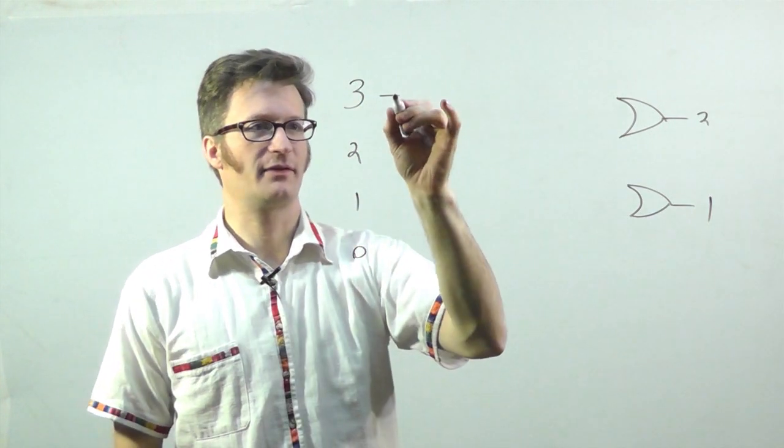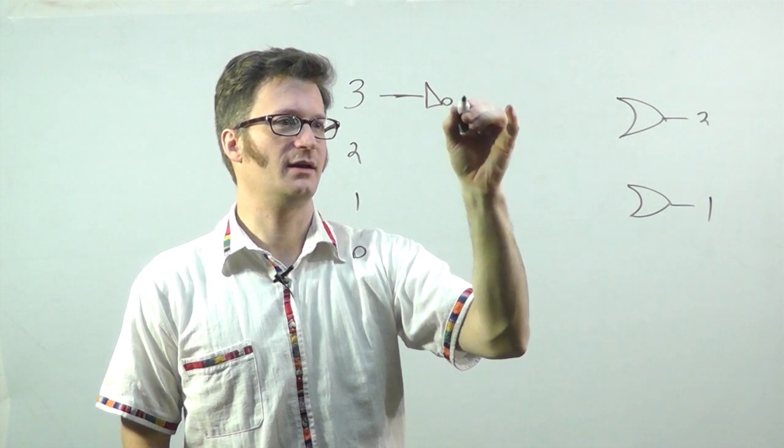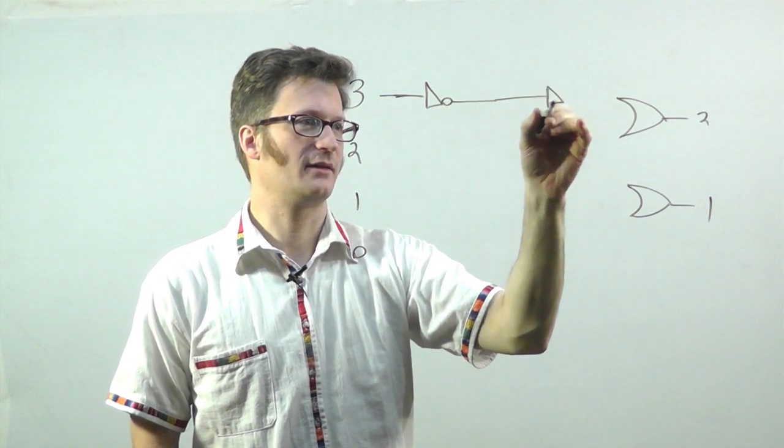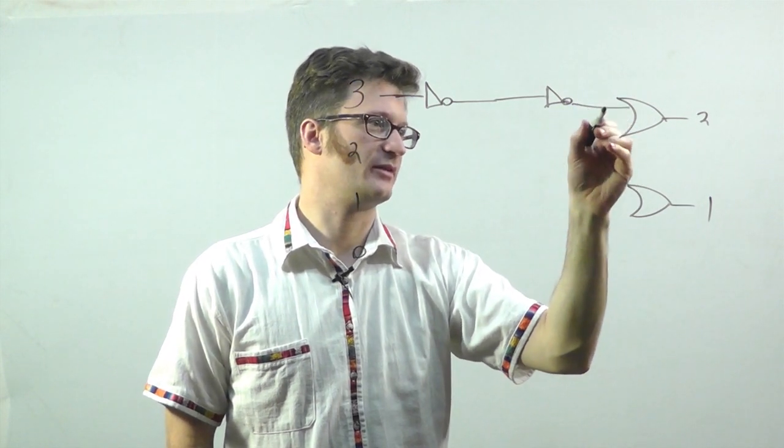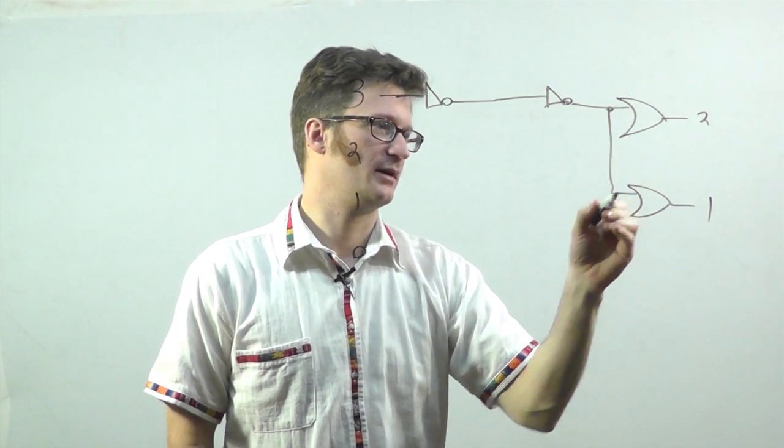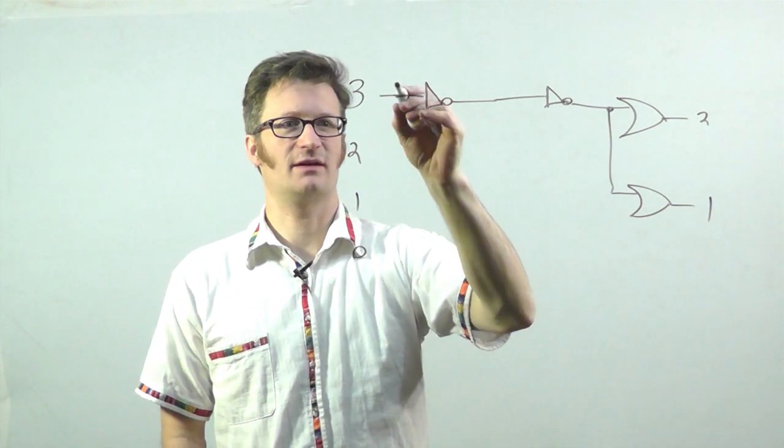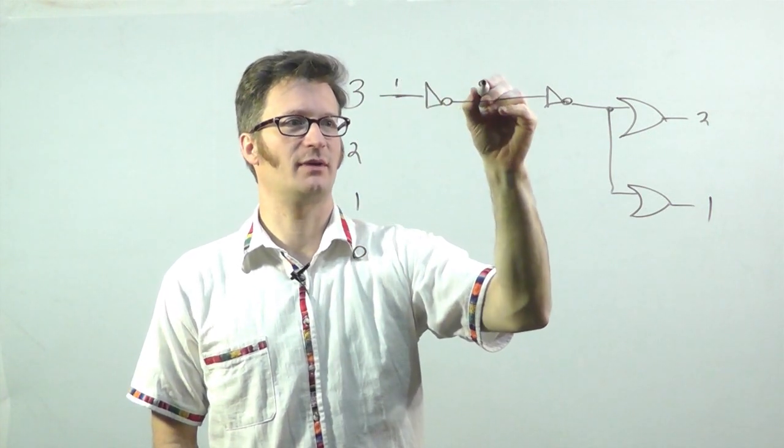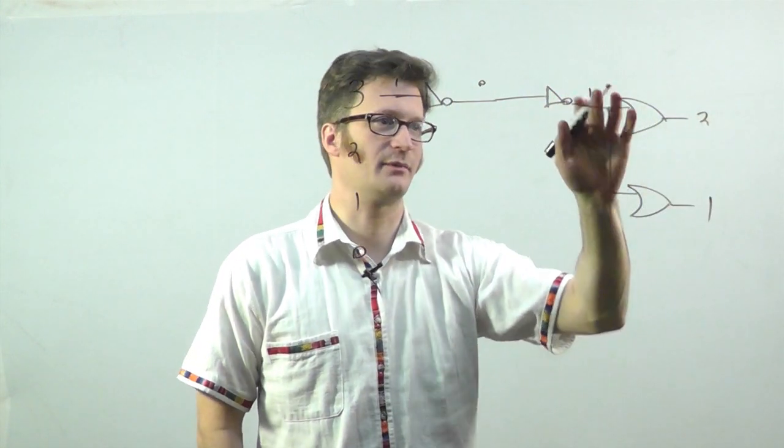And three comes, and it goes to an inverter, and then another inverter, which then goes to the two and the one. So, pretty much, if this is a one, it becomes a zero over here, and a one, and then we get the three displayed over here.